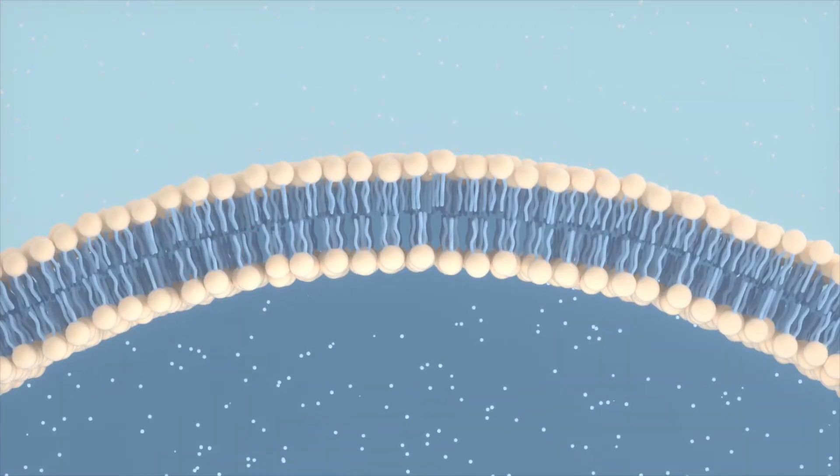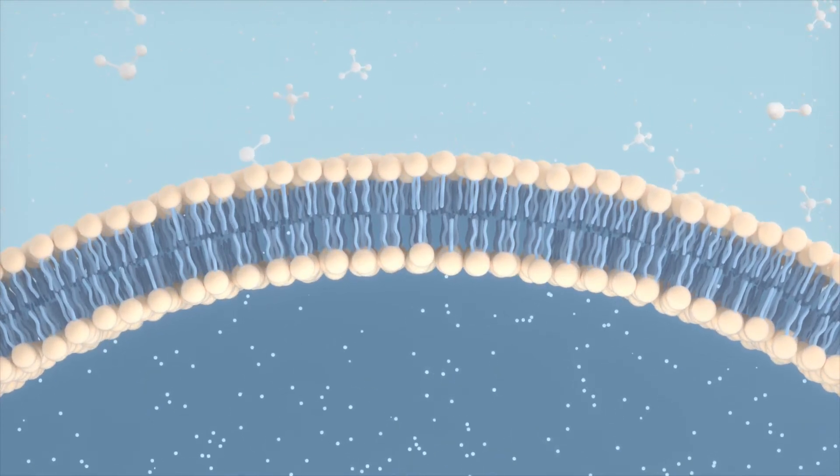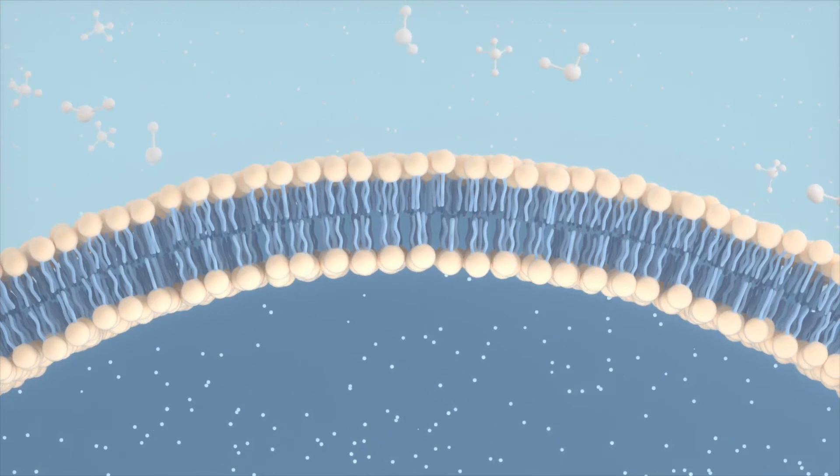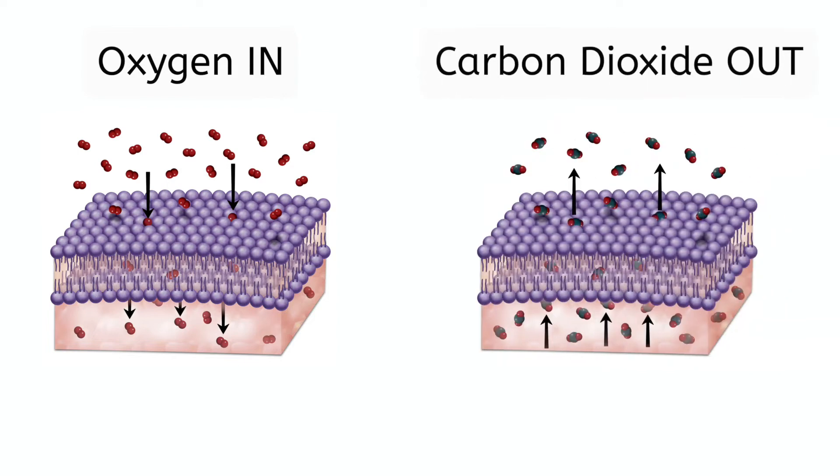We know that the cell membrane needs to allow certain substances in and out. Obviously, your cells need a constant supply of oxygen coming in, and they need to be able to let carbon dioxide out. If either of these molecules had a hard time getting across the membrane, it would be difficult for your cells to function.